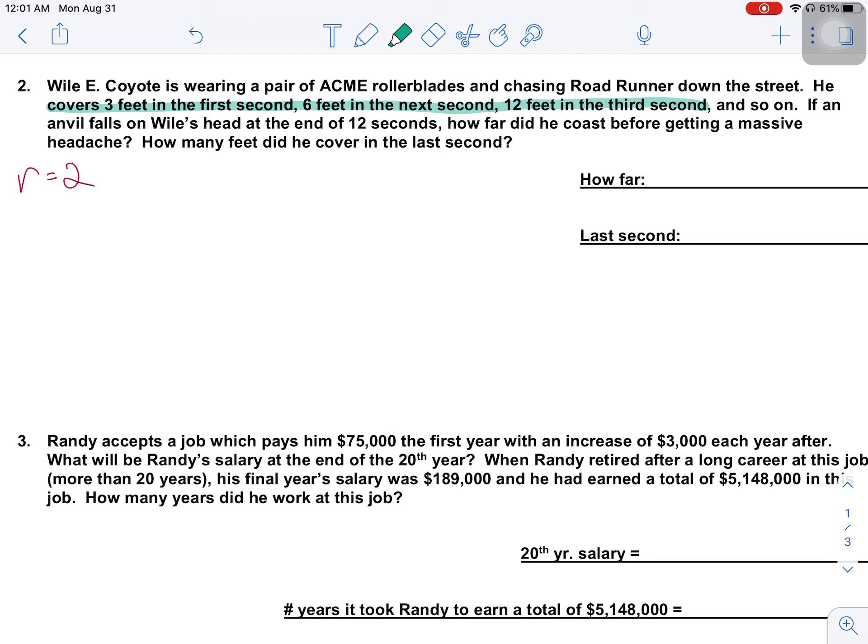If an anvil, see, I told you this wasn't going to end well. If an anvil falls on Wile's head at the end of 12 seconds, how far did he coast before getting a massive headache? So let's do the how far did he coast? So how far he coasted is our total distance. So what did he cover? The first second, the second second, and the third second all added up. So that means, let me get a little bit of information here. So U sub 1 is equal to 3. I know my common ratio. I know my N value is 12 because 12 seconds.